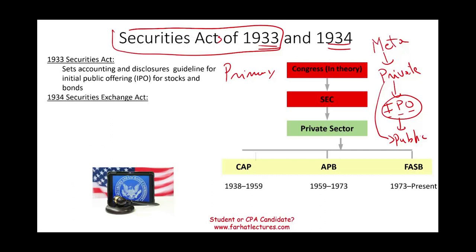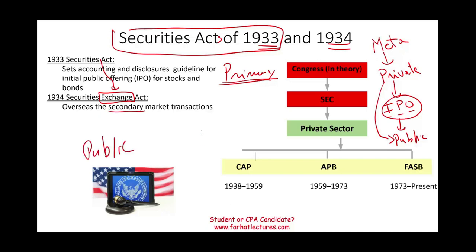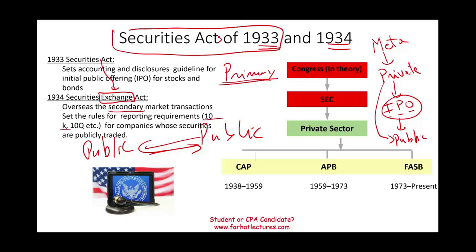The Securities Exchange Act of 1934 — note the added word 'exchange' — deals with secondary markets. In 1933, the rules apply when a company initially goes public (primary market). In 1934, once you are public and traded on the exchange, the company must report certain information — 10-Ks (annual reports), 10-Qs, and other regular reports — to inform investors and the public. The SEC oversees both the primary and secondary markets but does not set accounting rules; they delegate that to the private sector.